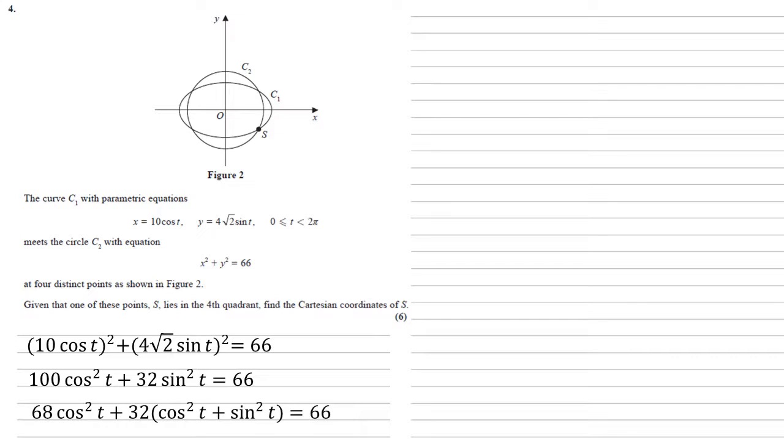As we said before, cos squared plus sin squared equals 1. So we get 68 cos squared t plus 32 equals 66.